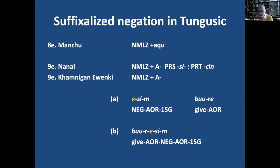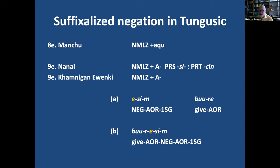But even if it was not so, we can still continue with the explanation that maybe this *ese*, as a negator, was suffixed to nominal verbs and became a suffix for privative verbs.